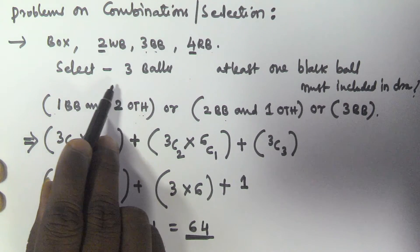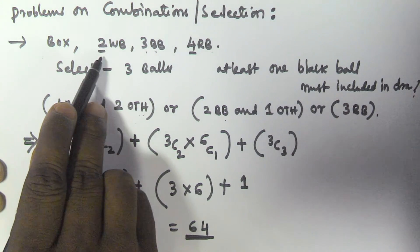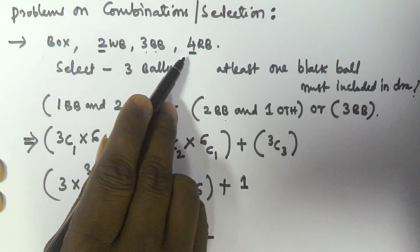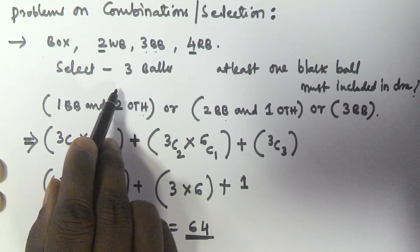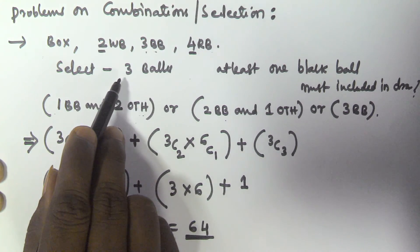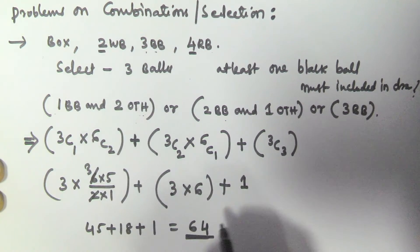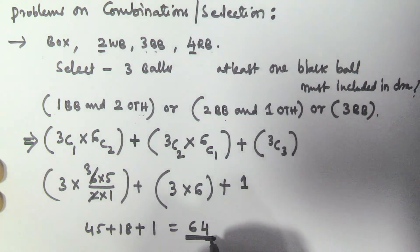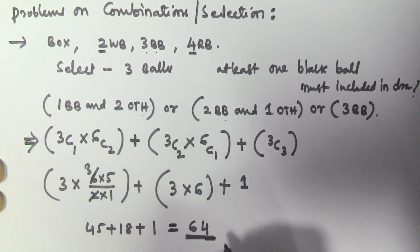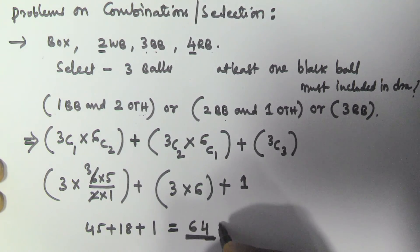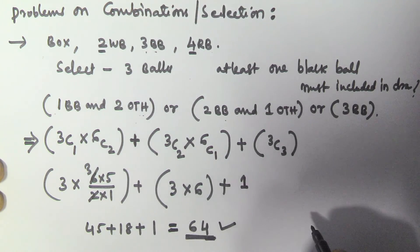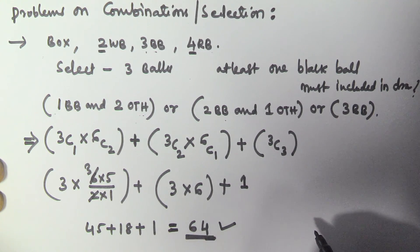So we can select 3 balls from this box — which contains 2 white balls, 3 black balls, and 4 red balls — such that the draw contains at least one black ball in 64 ways. I hope you got this one. Thank you very much for watching this video and please subscribe to my channel.